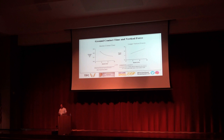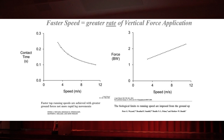Two studies from my mentor Dr. Peter Weyand basically established this conceptually. On the graph on the left, speed in meters per second — everything from a slow jog all the way up to an elite-level sprint — shows shorter ground contact times. On the right, vertical force normalized to units of body weight. If I weigh 200 pounds, one body weight is 200 pounds, two body weights is 400 pounds, three body weights is 600 pounds. This is a simplification, but you get the idea.